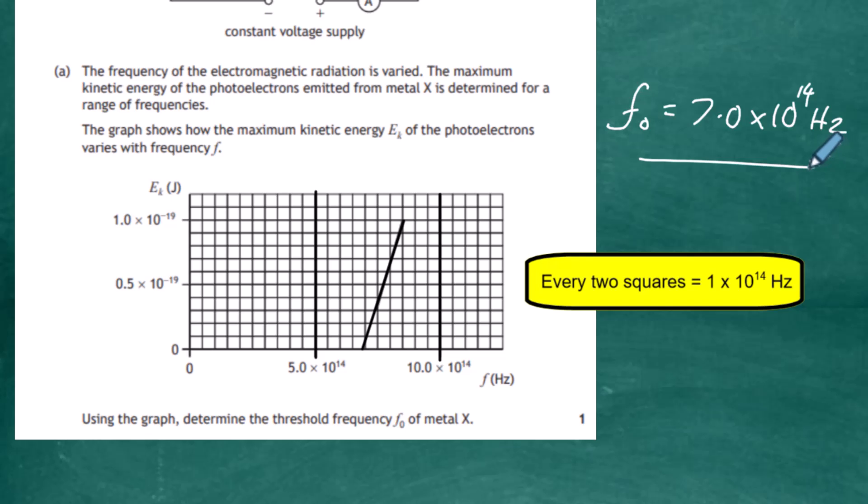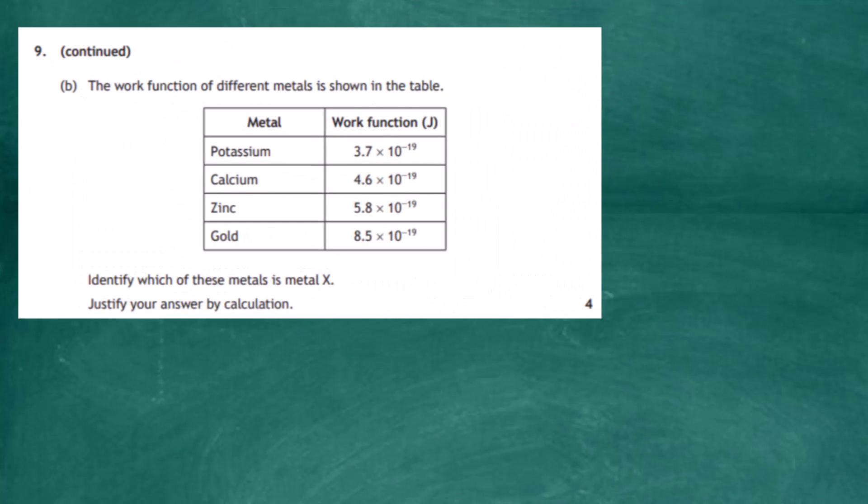Question 9 continued, part B. The work function of different metals is shown in the table—potassium, calcium, zinc, and gold, with the work function measured in joules listed in the right column. Once we know the threshold frequency, we can work out the work function of the metal.